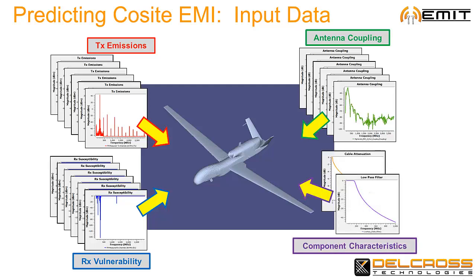Finally, outboard components such as filters, cables, and even nonlinear amplifiers may be included. Amplifier models can introduce intermodulation products that must be considered in any COSITE analysis.